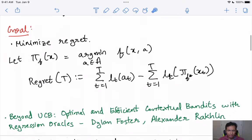Hello everyone, in this video I will go through this paper Beyond UCB: Optimal and Efficient Contextual Bandits with Regression Oracles by Dylan Foster and Alexander Racklin.